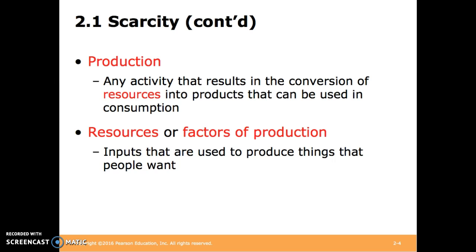Production is any activity that results in the conversion of resources into products that can be used in consumption. Resources, or factors of production, are the inputs for the production itself. We'll discuss a couple of different types of resources or factors of production, and talk about an example of the farmer.